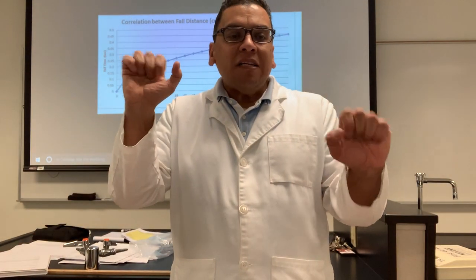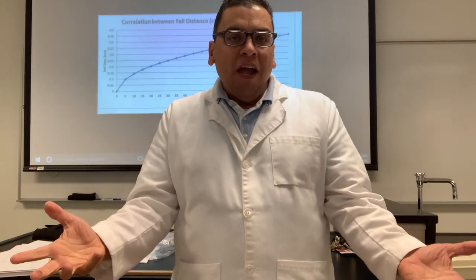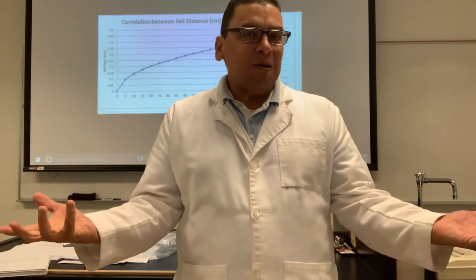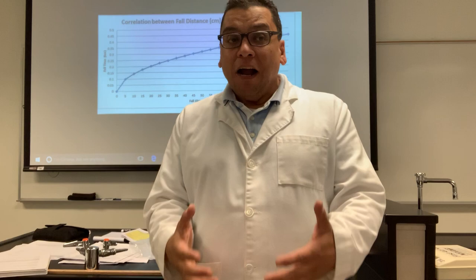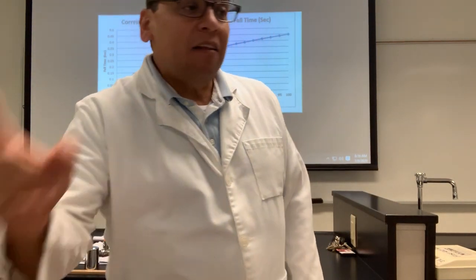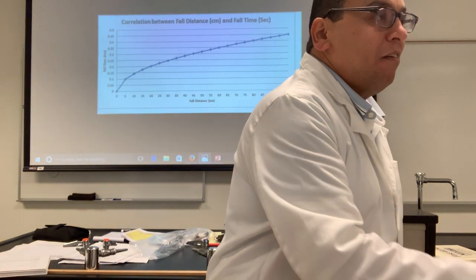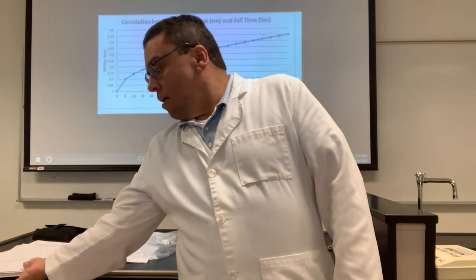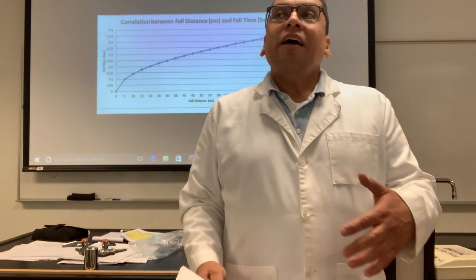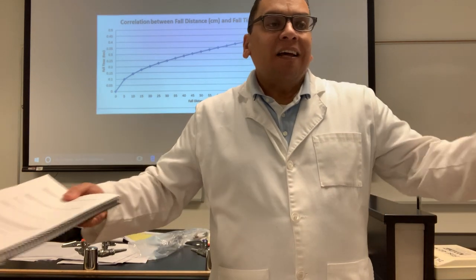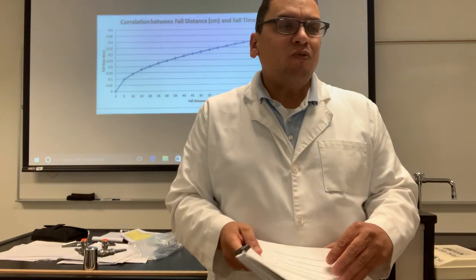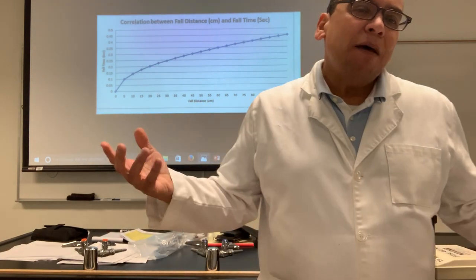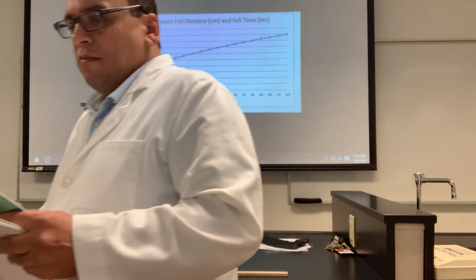There's no way to fully control variables with 28 random people, so know that the data you get today may not be accurate. But the point is not accuracy — it's about practicing the scientific method. The last question asks how many measurements you will make: 10 drops per hand.